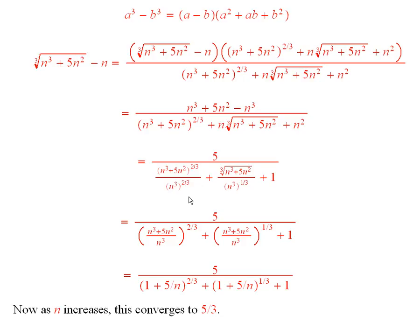So now, if you look at this, from the way we do roots and exponents, this is equal to this, and now, inside here you have 1 plus 5 over n, inside here 1 plus 5 over n, and so it's reasonable to suppose that as n gets large, this expression will converge to 5-thirds.